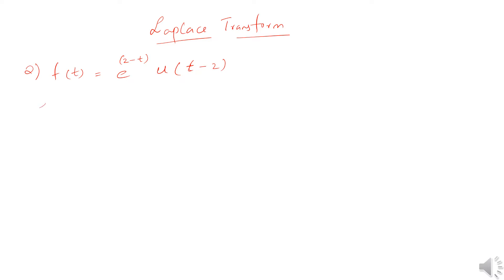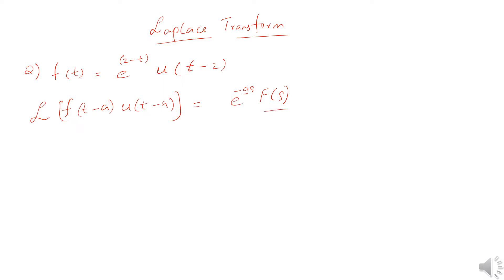First, let's recall the Laplace transform formula for the unit step function. The Laplace transform of f(t-a)·u(t-a) is given by e^(-as) multiplied by F(s). So we need to find two things: the value of a, and F(s).